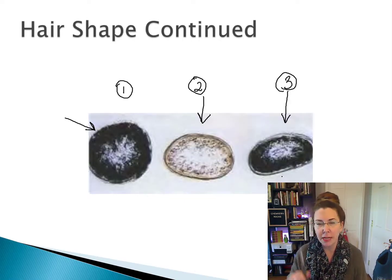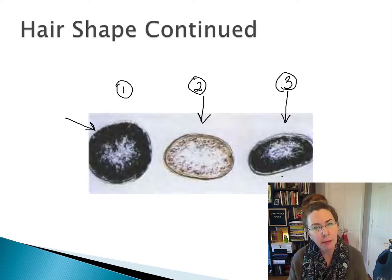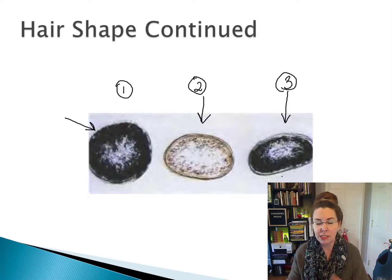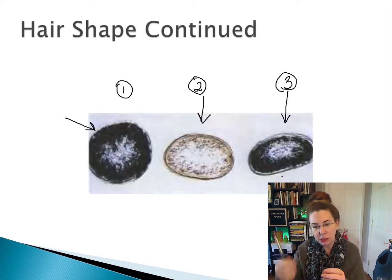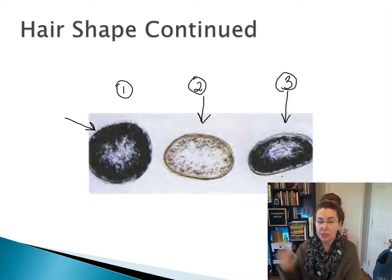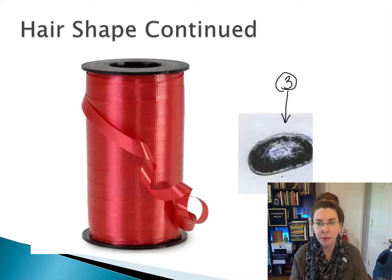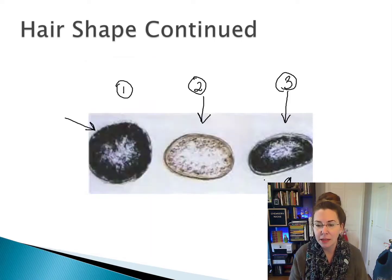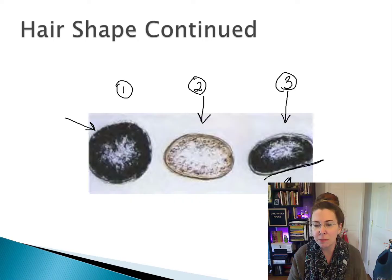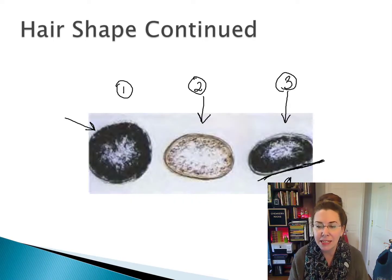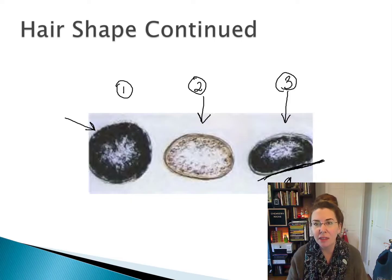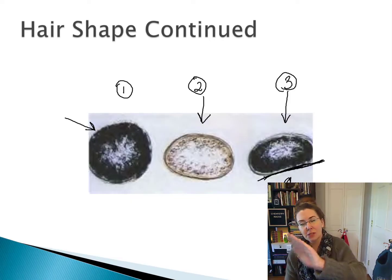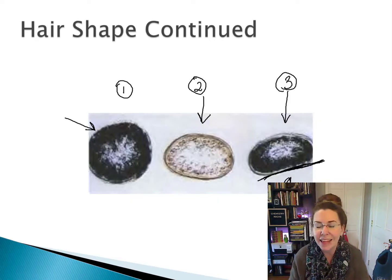If you've ever used curling ribbon at the holidays — the ribbon with little ridges that you run a pair of scissors along and it curls up — that functions very similarly to what's happening here. This flat edge is like the edge on that ribbon that we've run our scissors along. It creates additional tension on that side, which then causes the curl to form in that direction.